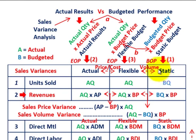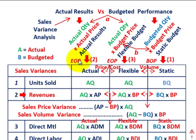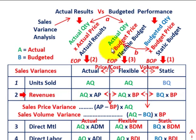For the static budget, you take your budgeted quantity (BQ) times some budgeted price (BP) — that's your static budget, set up at the beginning of the period. For your actual results, you take actual quantity (AQ) times actual price (AP). For your flexible budgeted amount, you take the actual quantity from your actual results times the budgeted price from the static budget. So: actual quantity times budgeted price equals your flexible budgeted amount.